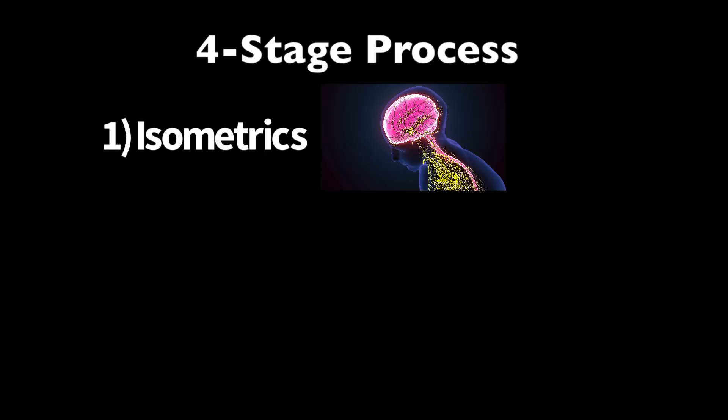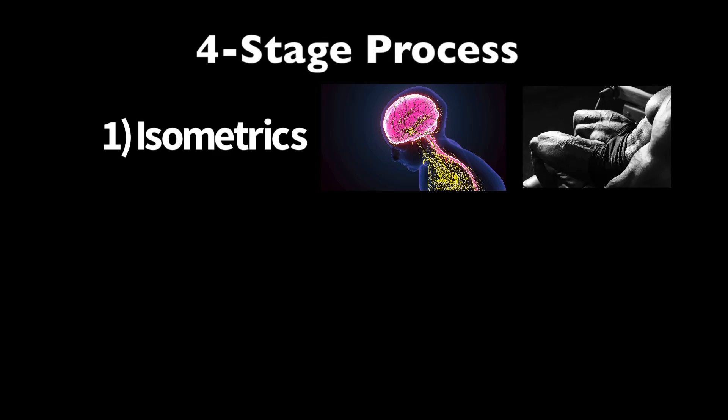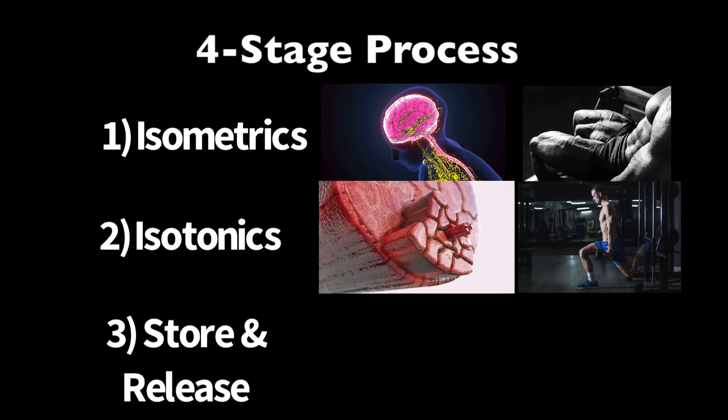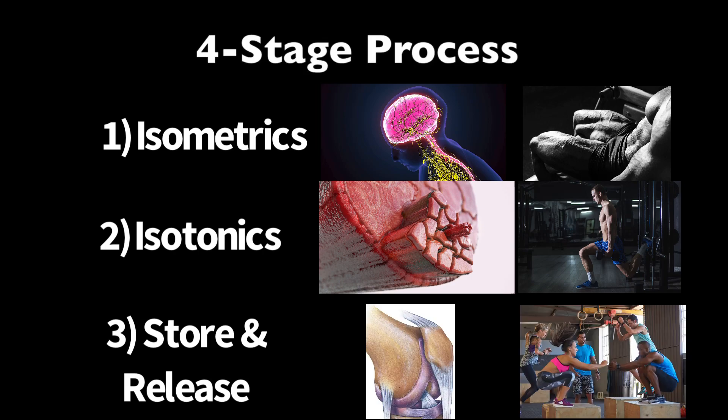If we talk about the four-stage process to decrease pain: stage one is isometrics, which uses the central nervous system to activate the quads. Stage two is isotonics, mainly focusing on strengthening the quadricep muscle. And stage three is where you're getting the tendon to behave in a store-and-release manner again.